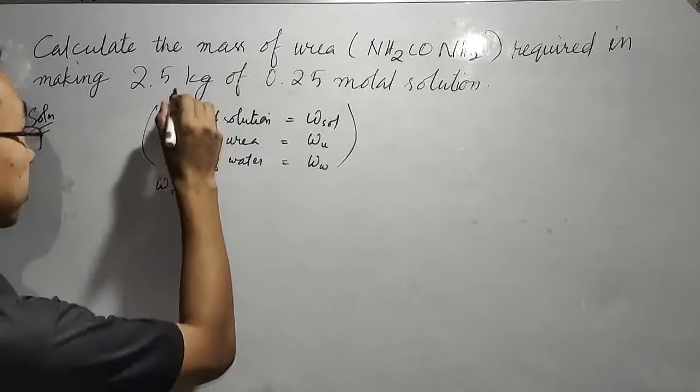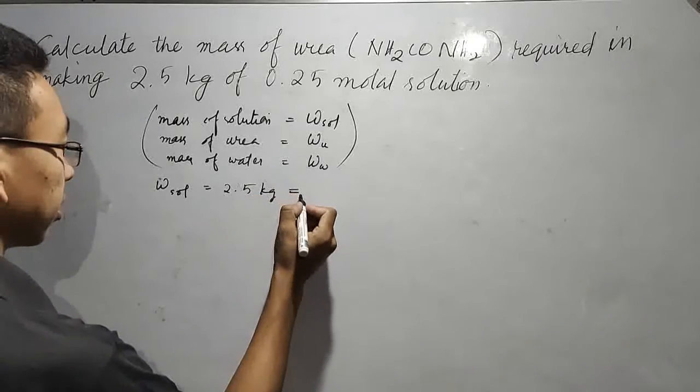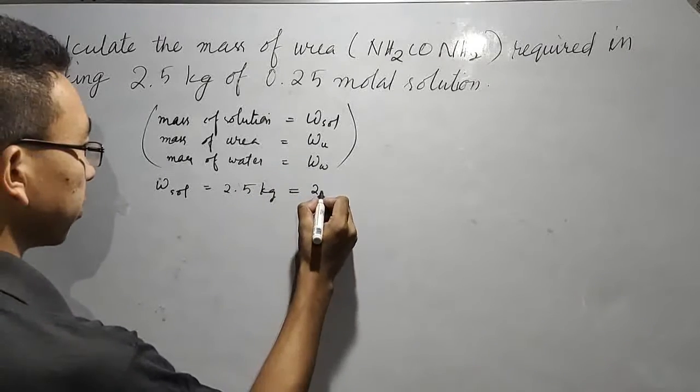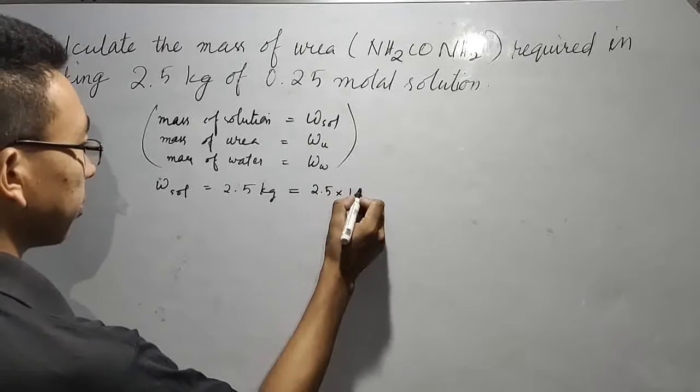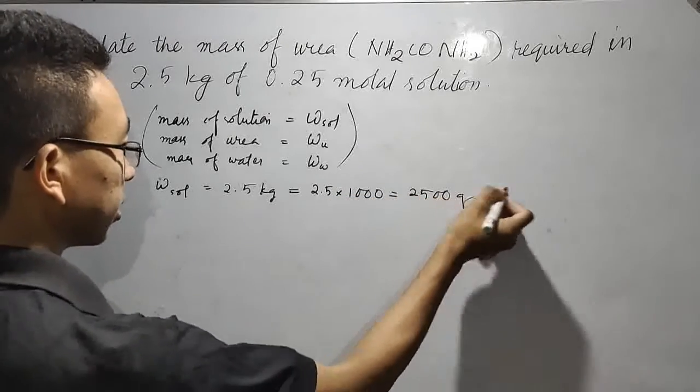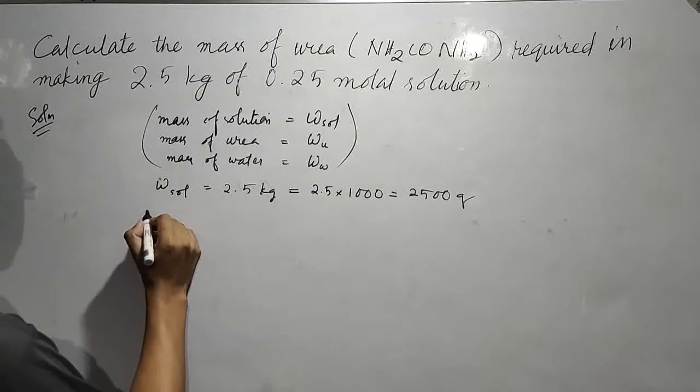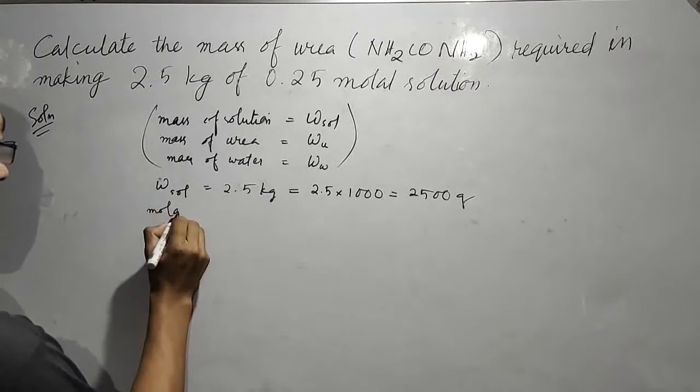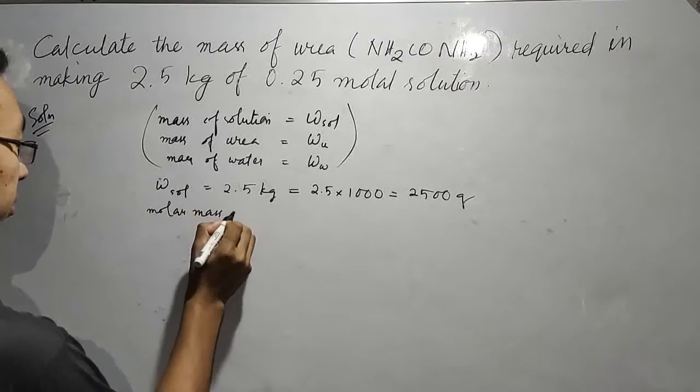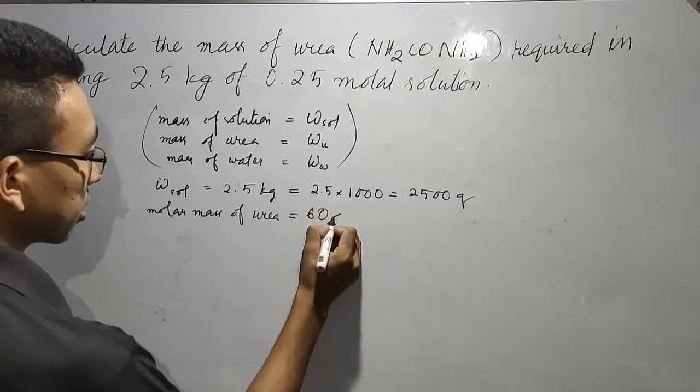Mass of solution W_sol equals 2.5 kg, which I will convert into grams, so multiplied by 1,000, we get 2,500 grams. Then molar mass of urea, we will get 60 gram per mole.